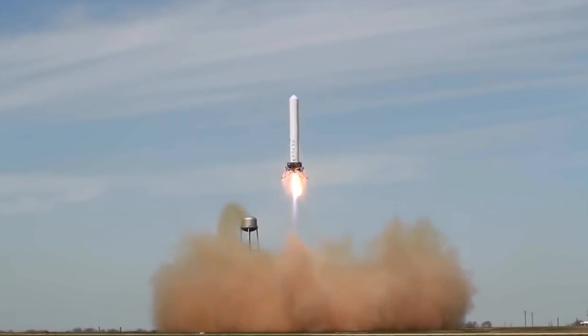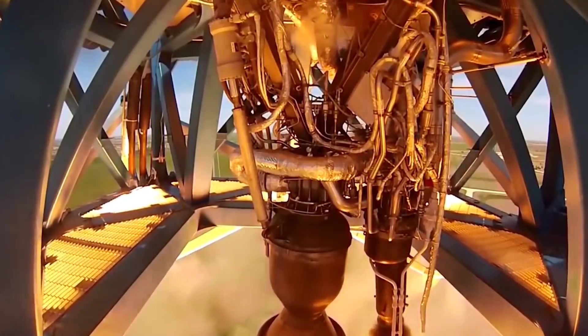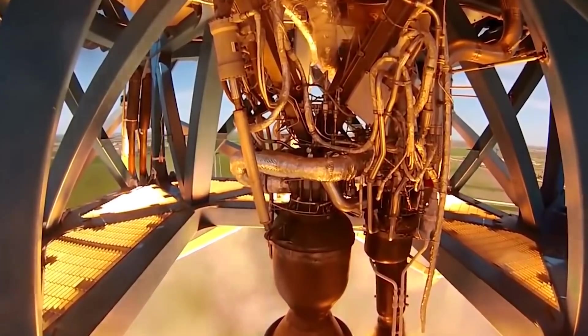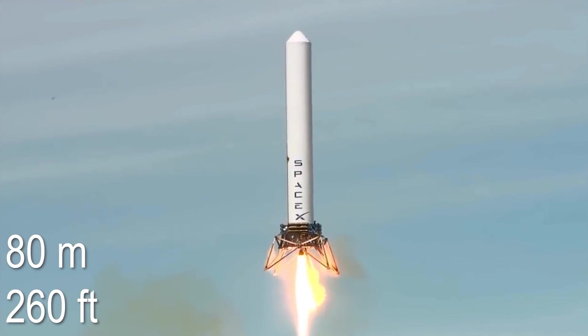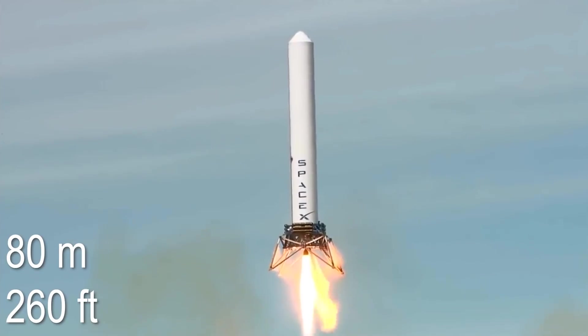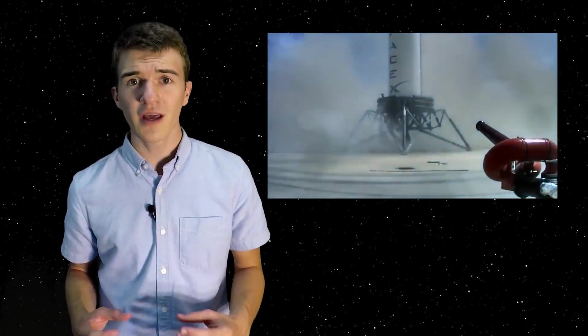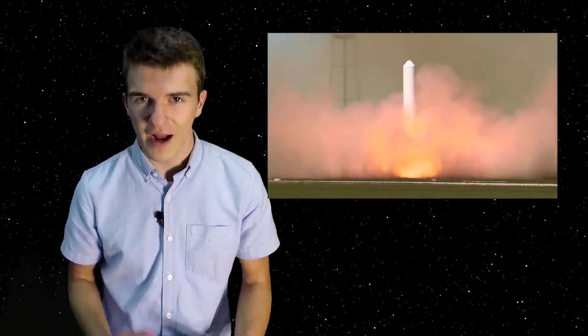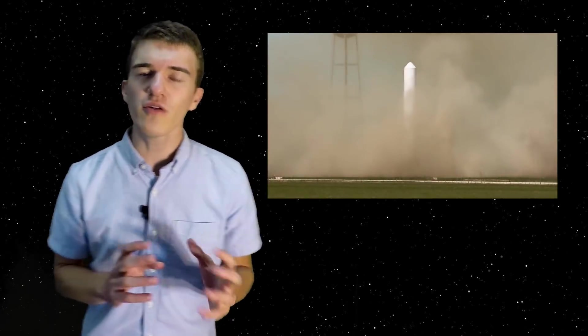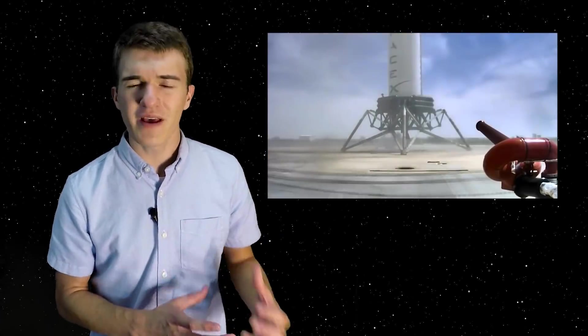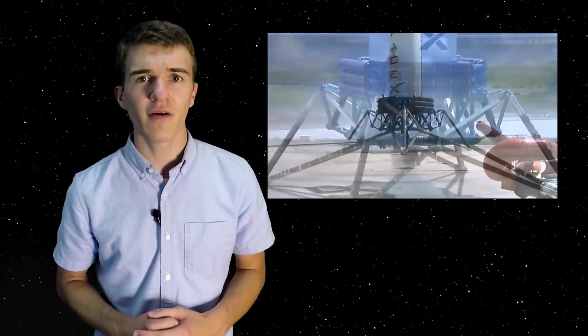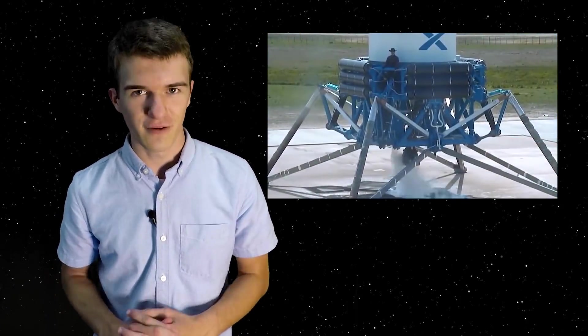So now let's jump back into the Grasshopper rocket and see more of the developments that they had made. Now, on March 7th of 2013, it flew for 34 seconds and reached an altitude of 80 meters. Now, this was the first attempt of what is called a hoverslam landing, which is a very efficient method of landing an object, but it's also very risky because if you start too late or too early, you'll probably run out of fuel and then eventually crash into the surface. Now, if you want to learn more about hoverslam landings or just how SpaceX lands their vehicles all together, let me know in the comments and I might make a video about that in the future.